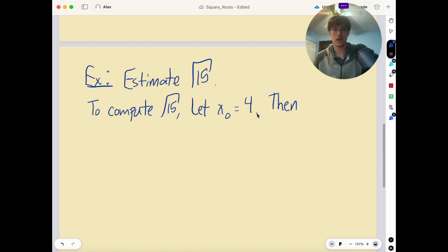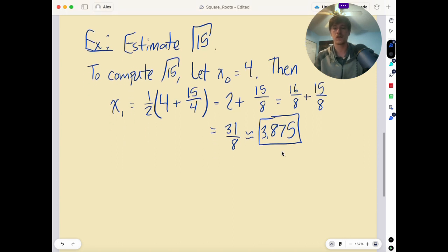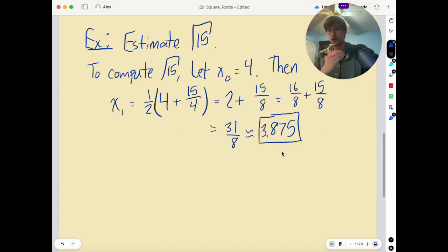Then, according to our procedure, which I need you all to compute with me, because why would you program something that you have had no experience with computing by hand? You should always do stuff by hand first. x1 is just going to be the average of 4 and 15 divided by 4. I distributed the 1 half, so I got 2 plus 15 over 8. Then, I found a common denominator, so that's 16 over 8 plus 15 over 8, which is 31 over 8, which is approximately 3.875. That's our first guess.